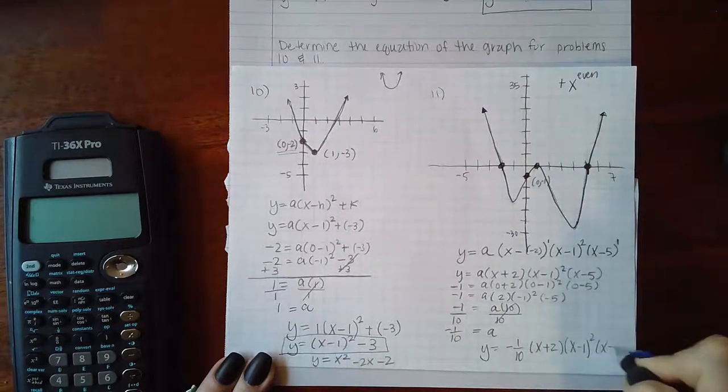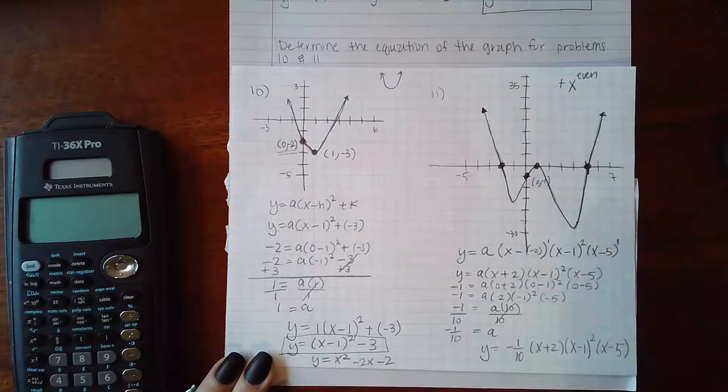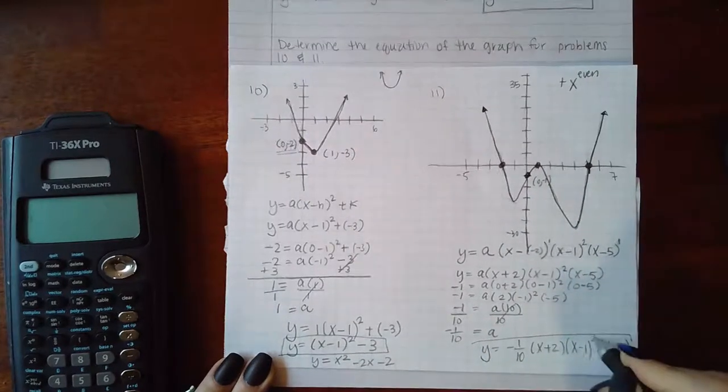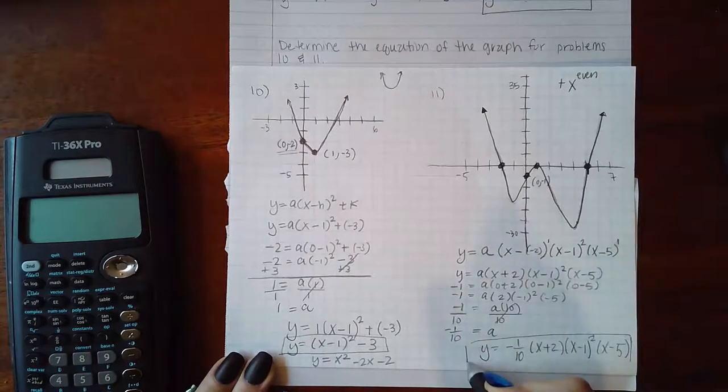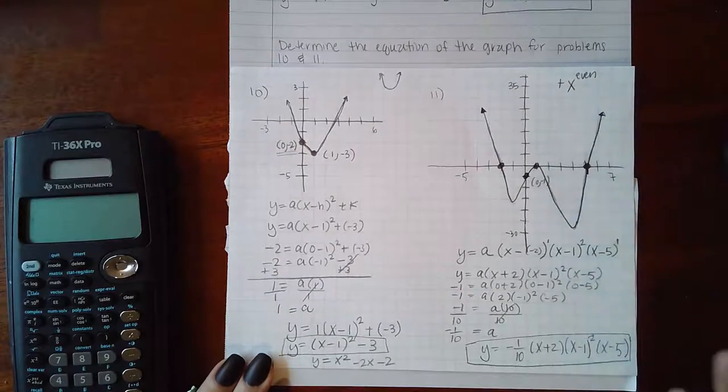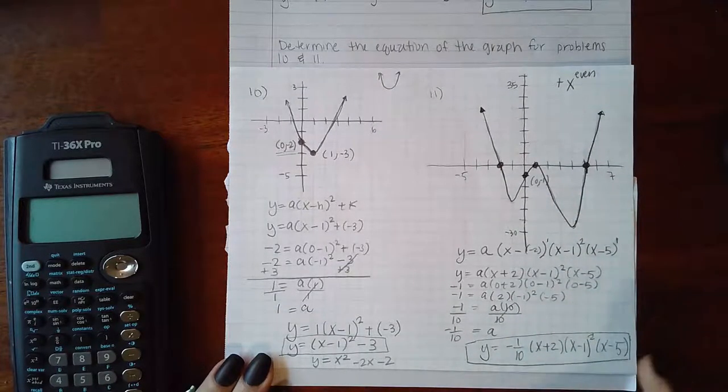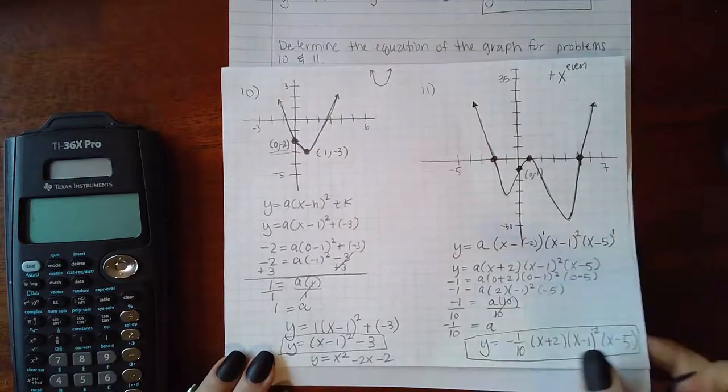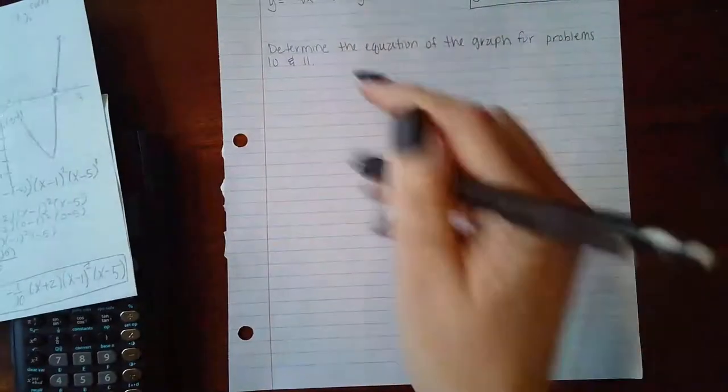That means my equation should equal negative 1/10th times x plus 2, x minus 1 squared, and x minus 5. If the choices on my multiple choice exam have it in factored form, then I am done. But if the choices have it in expanded form, then I am not done; I have to actually multiply this all out.